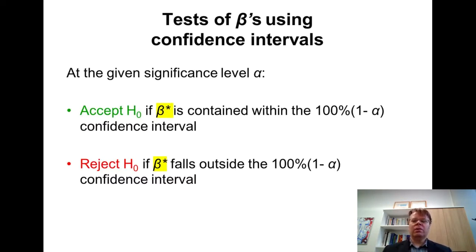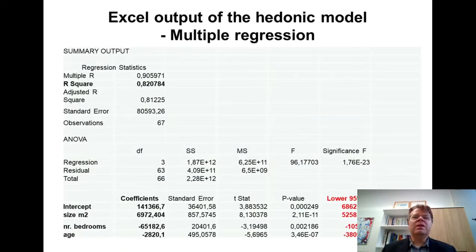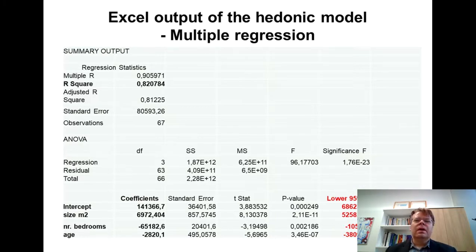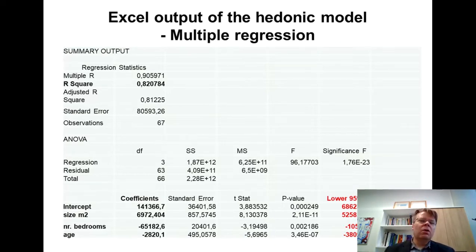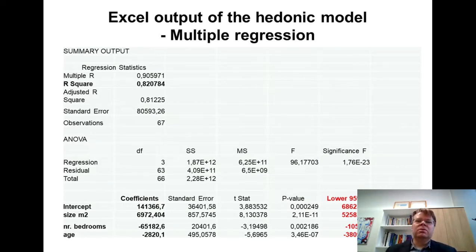Let's make a practical exercise. Think about the significance test where beta* is zero — we are testing whether the coefficient is significantly different from zero. Taking size of apartment in square meters: we ask whether the value of zero is included in the confidence interval. The confidence interval for size in square meters has a lower bound of positive 5,258 and upper bound of 8,686. Clearly, zero is not within that interval — zero falls outside the interval. Therefore, we can reject the null hypothesis that the true beta-coefficient for size in square meters is equal to zero.